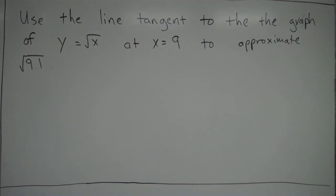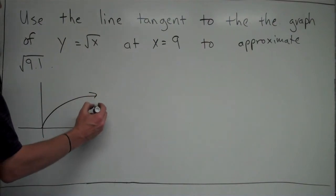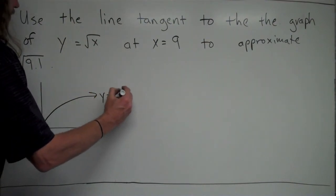A key thing here is they're saying use the line tangent to the graph at x = 9. That tells you from the start, in order to use the line, you have to come up with it first. So that's our first thing. But before we get there, I want to make a quick sketch of what this graph looks like, just to give us a reference. So y = √x looks kind of like this.